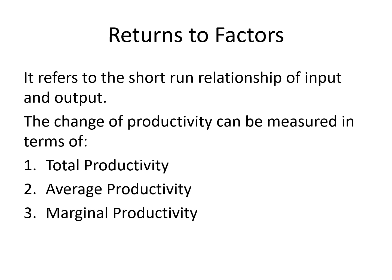Returns to factors, also called factor productivities, refers to the short-term relationship of input and output. Productivity change can be measured in three terms: total productivity, average productivity, and marginal productivity. Total physical product first increases at an increasing rate due to increasing returns to scale, then decreases due to decreasing returns to scale. Average productivity is calculated as total physical product divided by number of units. Marginal productivity refers to additional productivity generated by an additional unit of input.